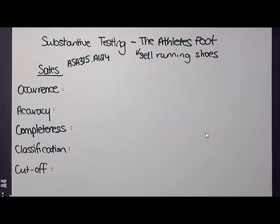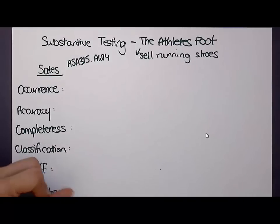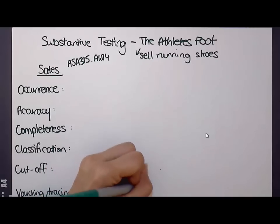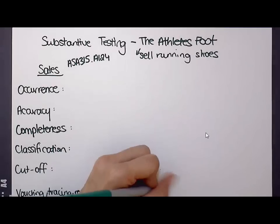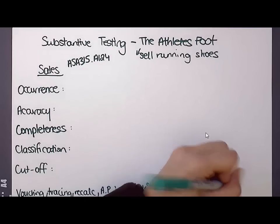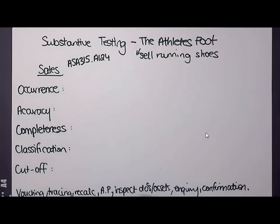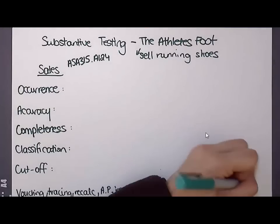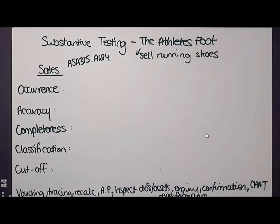Let's get into looking at how we can write a procedure for each of these. I'm doing this using my list of nine procedures, which I'll write at the bottom here. I've got vouching, tracing, recalculating, analytical procedures, inspecting documents and assets, enquiries, confirmation, re-performance, and computer assisted audit techniques.